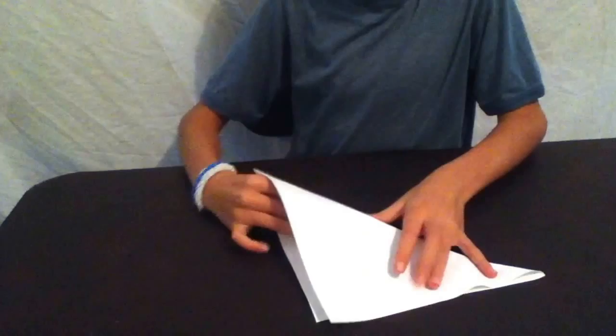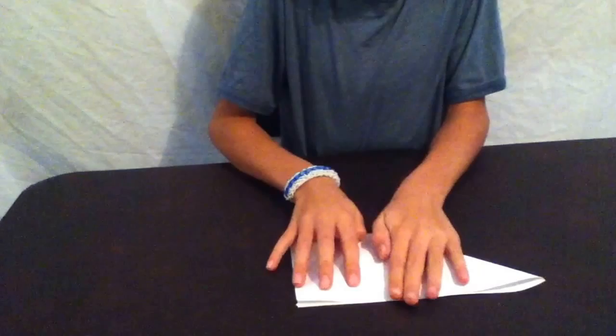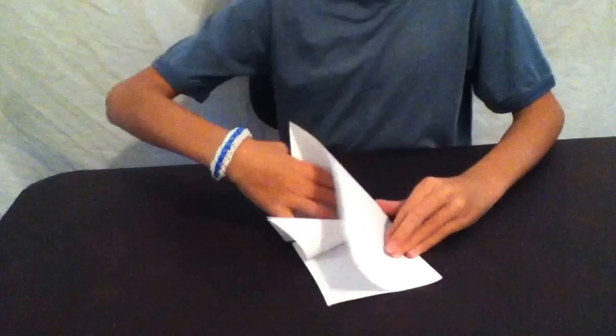So when it's on one of the triangles, you're going to want to fold it up, stick your finger in the middle, and make a square. Just like that.